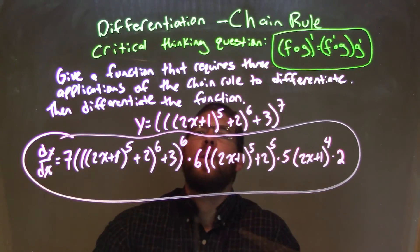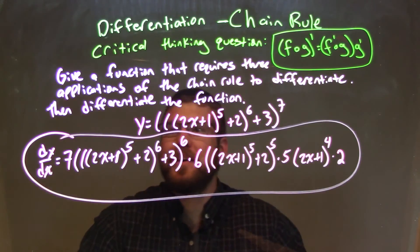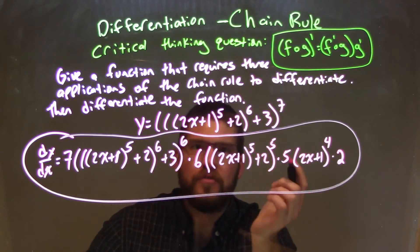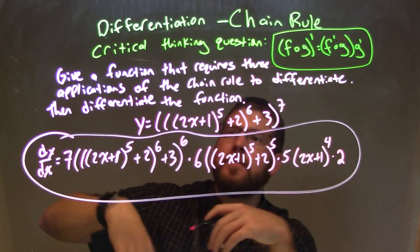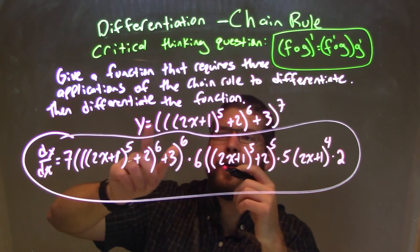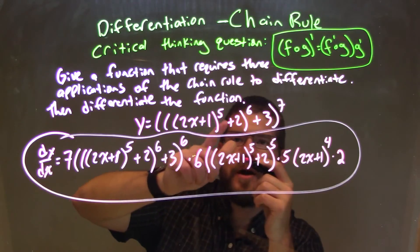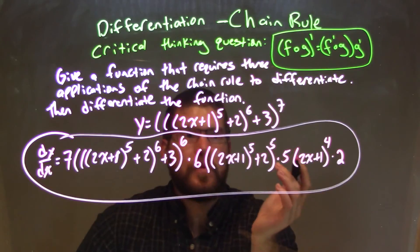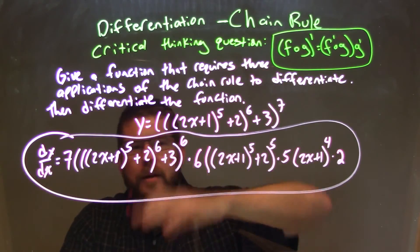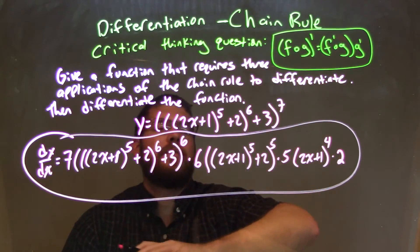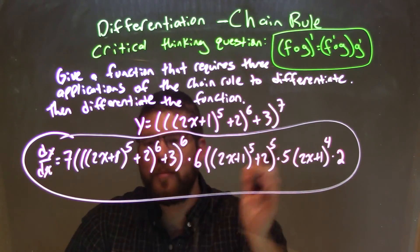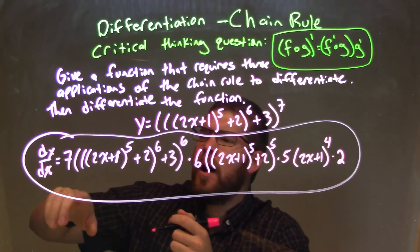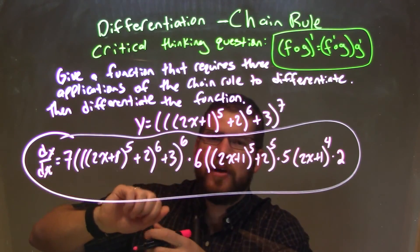Let's do a quick recap. We wanted to find a function that requires three applications of the chain rule to differentiate, then differentiate that function. I broke this down with triple parentheses: y equals ((2x + 1)^5 + 2)^6 + 3)^7 — you can see where the parentheses are. It's like Russian dolls — derivative of the outside, times derivative of the inside, times derivative of the next inside, and keep going. If you know what I'm talking about with the Russian dolls, put it in the comment section below!